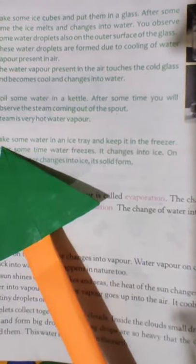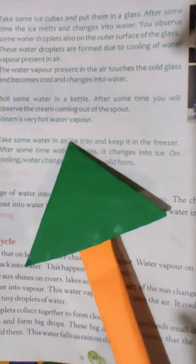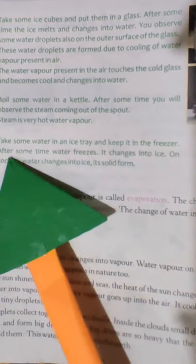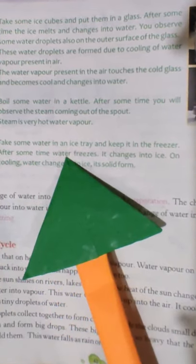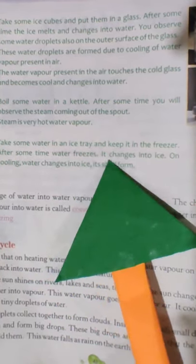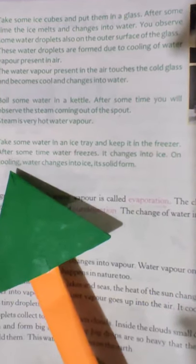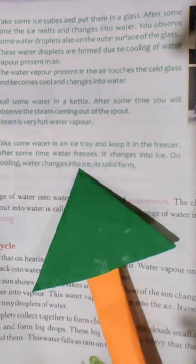Next activity: Take some water in an ice tray and keep it in the freezer. After some time, water freezes. It changes into ice. On cooling, water changes into its solid form.